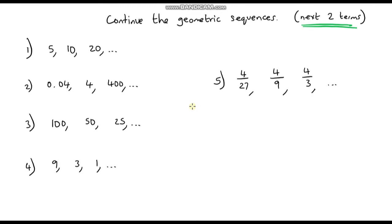Now that you can identify geometric sequences, your last task is to continue these geometric sequences by identifying the next two terms in each. I've given you the first three terms, so work out what the fourth and fifth terms are for each sequence.